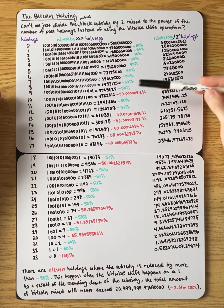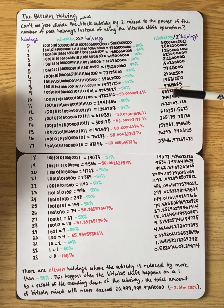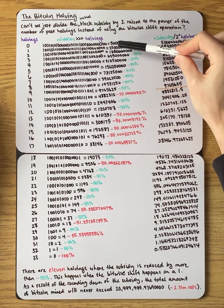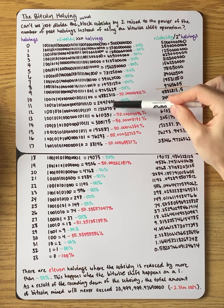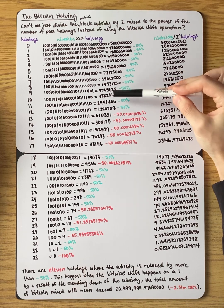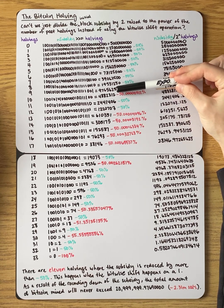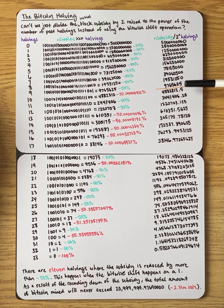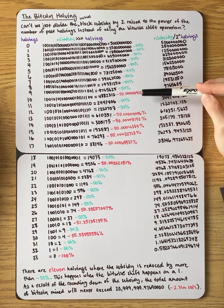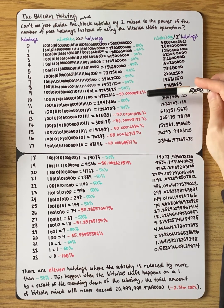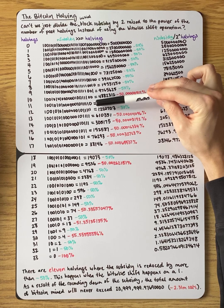Bitcoin's code has to have a way of producing an integer number of satoshis. By using the bitwise shift operation, we always ensure the block subsidy being calculated is an integer. But as a result, in this case we round down. You can see it clearly — from 25 satoshis to 12, whereas without any rounding it would have been 12.5. So we round down, and because we're rounding down, this halving is actually a reduction of slightly more than half — slightly more than 50 percent. That's the first time that happens.